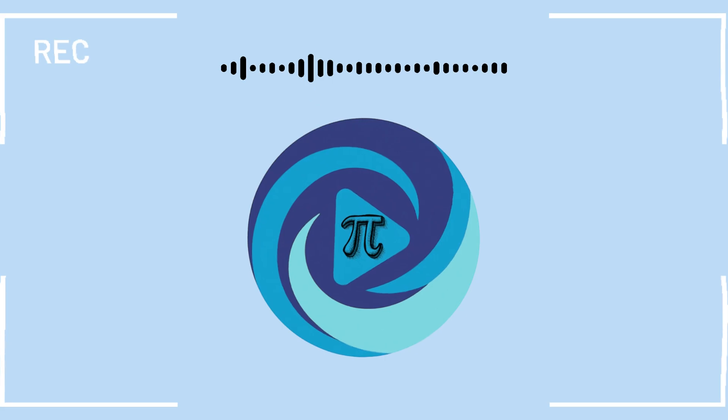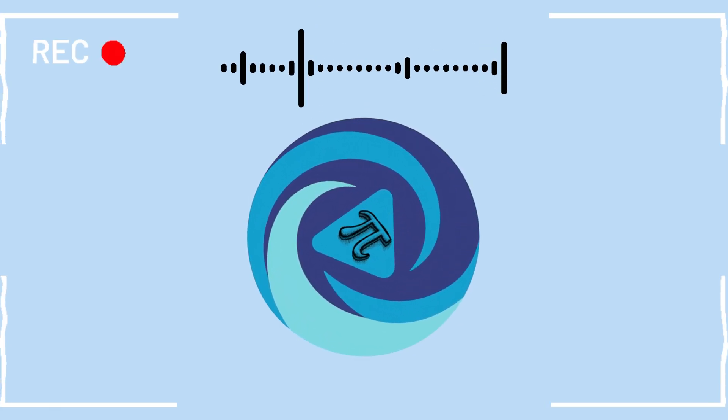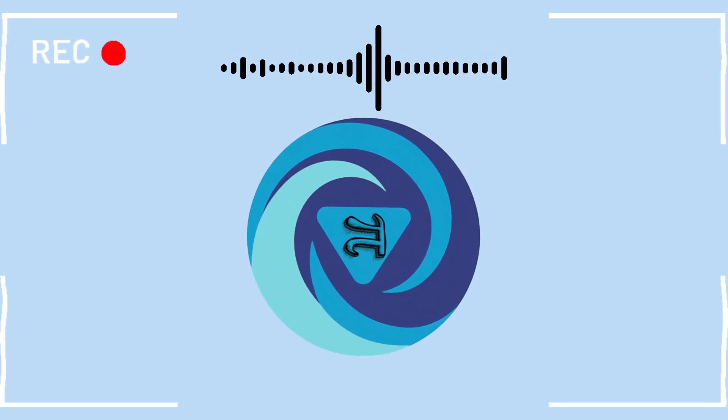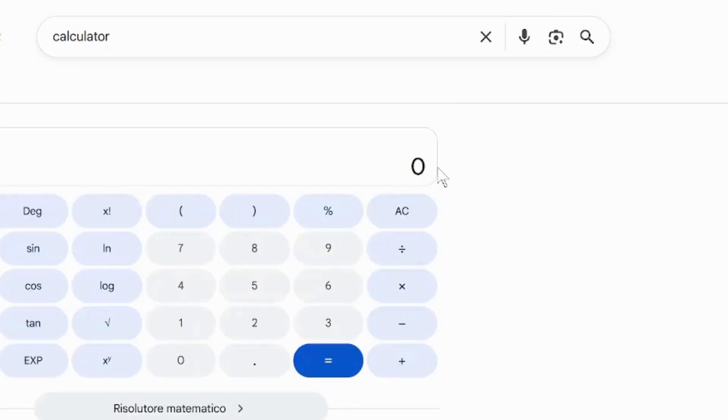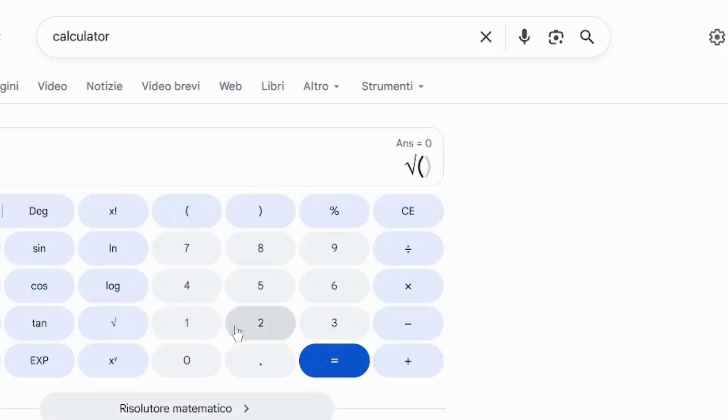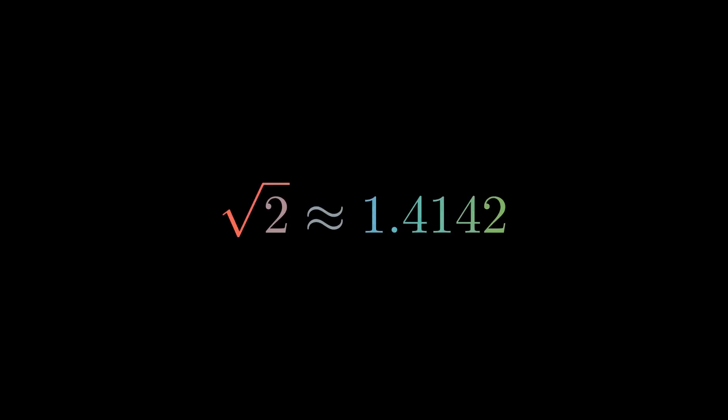But enough talk. You are here to discover how to approximate square roots using only paper and pen. First, take your calculator and write down the square root of 2. Memorize the first four decimal digits. We will use them soon to compare our results. Now let's play a game.